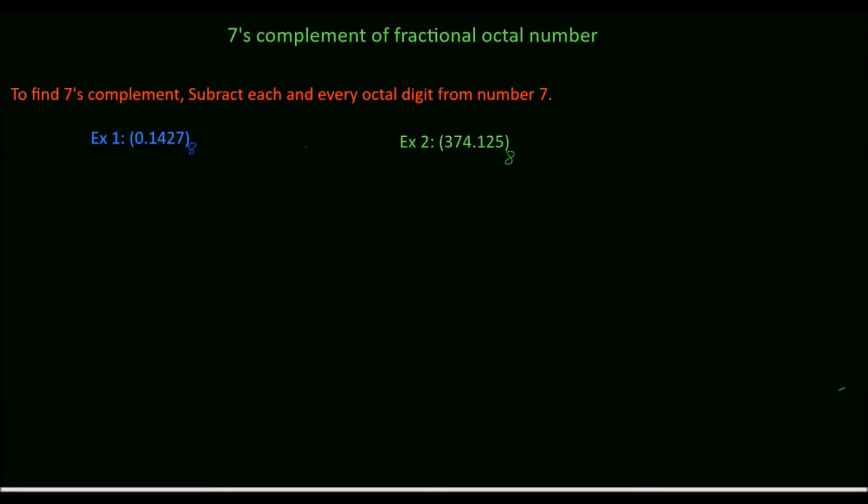In this tutorial, we will see how to find 7's complement of fractional octal number. To find 7's complement, we have to subtract each and every octal digit from number 7.